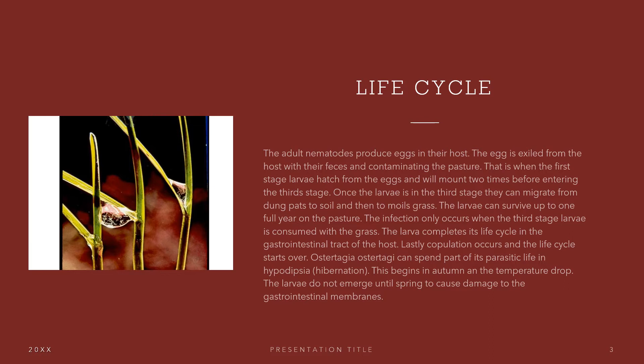The infection only occurs when the third stage larvae are consumed with the grass. The larvae complete their life cycle in the gastrointestinal tract of the host. Lastly, copulation occurs and the life cycle starts over. Ostertagia ostertagii can spend part of its parasitic life in hypobiosis, meaning hibernation. This begins in autumn at the temperature drop. The larvae do not emerge until spring to cause damage to the gastrointestinal membranes.